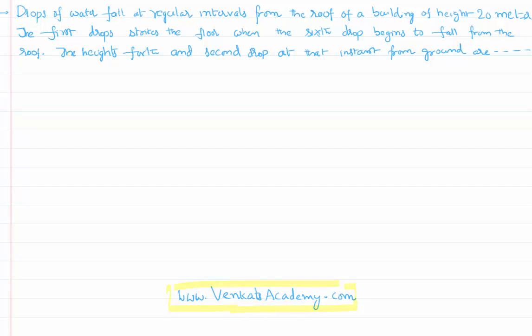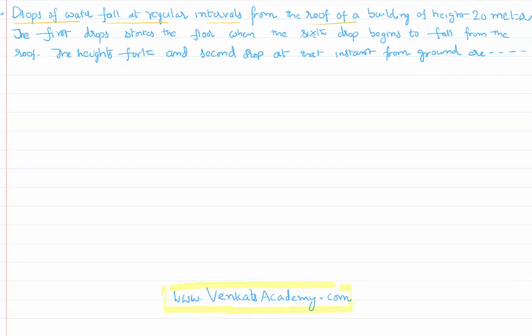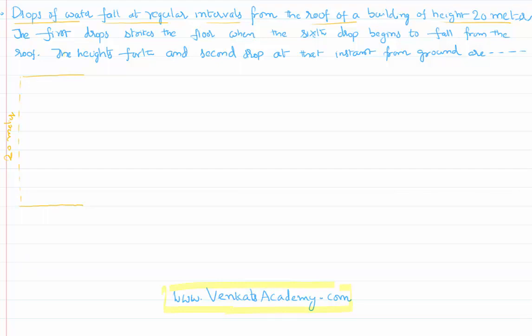Hello everyone, welcome to this video lesson. In this video lesson we are solving a problem based on one-dimensional motion, particularly a freely falling body under acceleration due to gravity. The problem is: there are drops of water falling at regular intervals of time from the roof of a building. The roof is at a height of 20 meters from the ground.